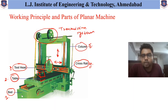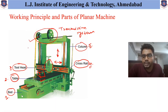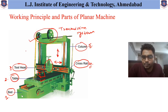A transmission system is provided which helps to obtain the table and tool movement. As you can see, a pulley arrangement is provided to obtain the transmission movement. We have now seen the major parts available in the case of the Planner Machine.